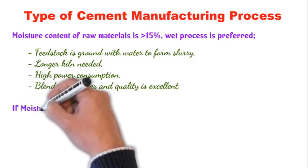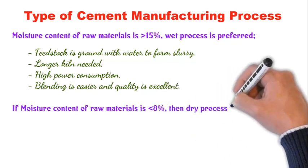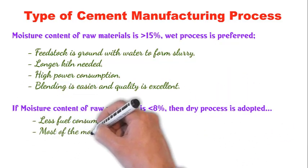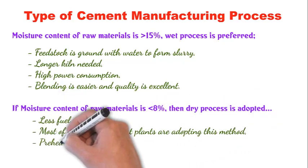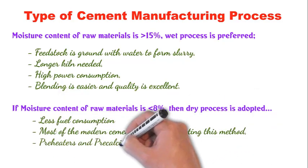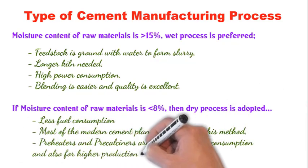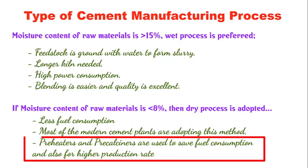If the moisture content is less than 8%, the dry process is followed. In the dry process, fuel consumption is less because the material contains very little moisture. Most modern plants in India and across the world use the dry process because it consumes less fuel. In this process, a preheater and pre-calciner are used to save fuel consumption and to achieve higher production capacity.